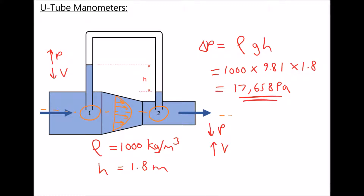It's important to understand that these devices do have various different limitations. In this scenario we have a height of water equal to 1.8 metres, so we would have a very large U-tube manometer. It is by no means a portable device, and it would be very difficult to move from one location to another.